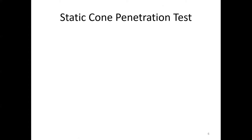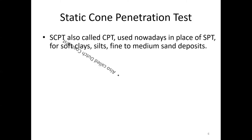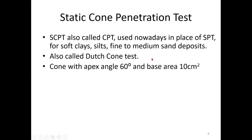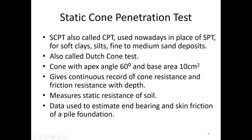This test will not give you any sample to test in the lab, but you will get a very good idea about the subsoil profile. Next comes the static cone penetration test. As the name suggests, you are not going to provide any impact or hammer blows — you use a cone. This is also called CPT. It is used for soft clays, silts, fine to medium sand deposits — almost all soil types. It is also called the Dutch cone test, and here also an apex angle of 60 degrees is used with a base area of 10 cm².